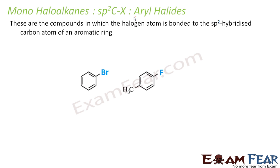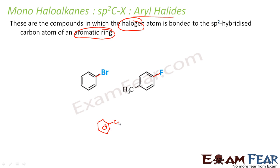The next type is aryl halide. In this case, the halogen is attached directly to an aromatic ring. For example, bromobenzene — where bromine is directly on the benzene ring — is an aryl halide. There is a key difference: benzyl halide has the halogen on a carbon adjacent to the ring, whereas aryl halide has the halogen directly on the ring carbon.